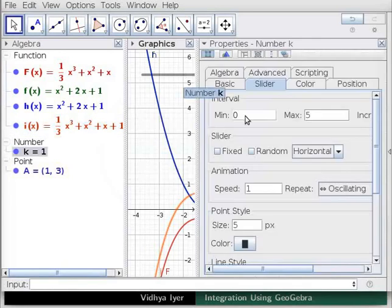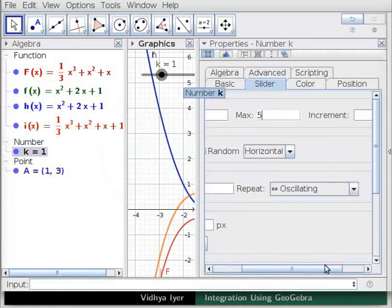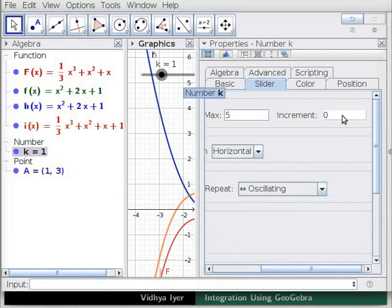Set min at 0, max at 5. Scroll right to set the increment to 0.01. Close the preferences box.